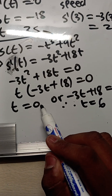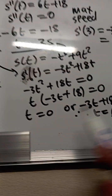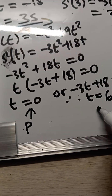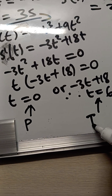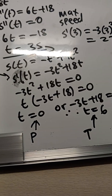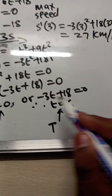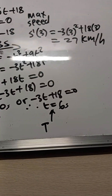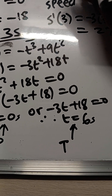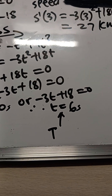So t = 0 corresponds to town P - the start - and t = 6 corresponds to town T - the finish. The cyclist moved from town P at t = 0 and arrived at town T at t = 6 hours.